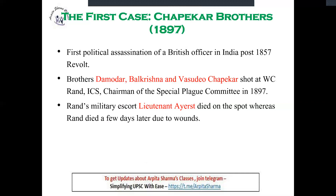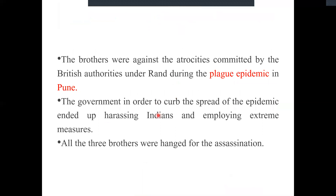Three brothers killed them. Why did they kill them? Because under the Plague Commission in 1897, the British officers were using the epidemic as an aim to harass Indians — they were forcibly entering homes and torturing people. This harassment was intolerable, so the brothers killed the officers. After the killing, the officer also killed one of the brothers, and all three eventually faced death.